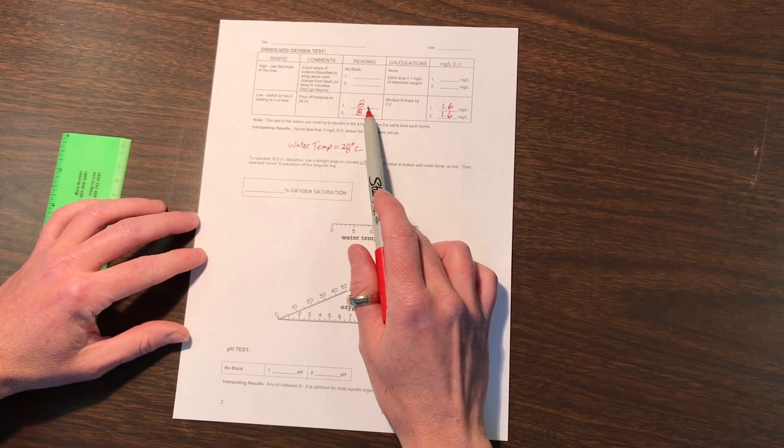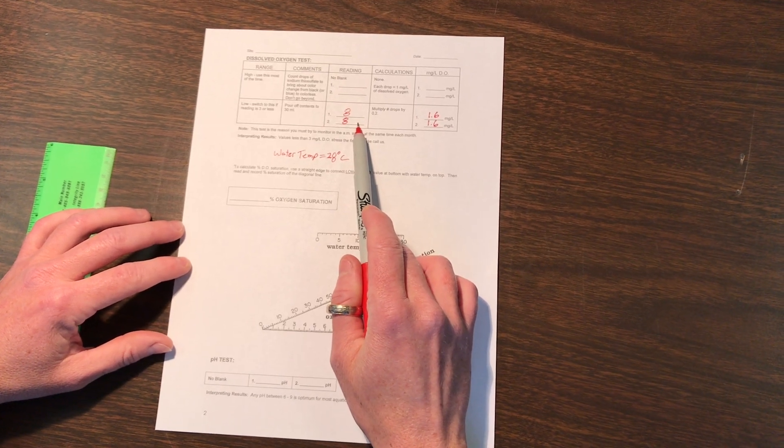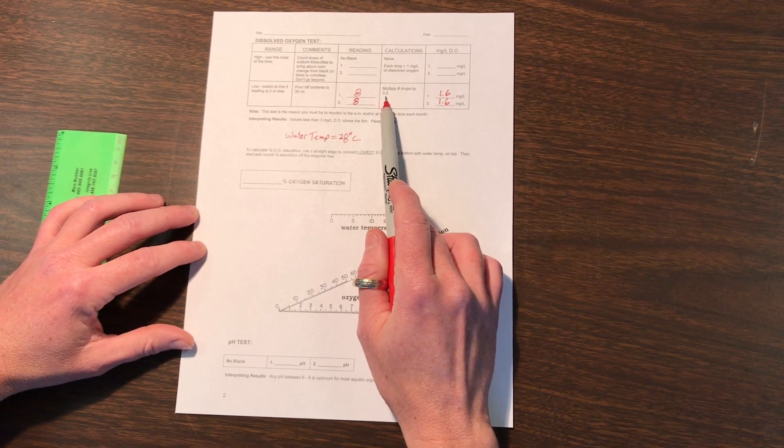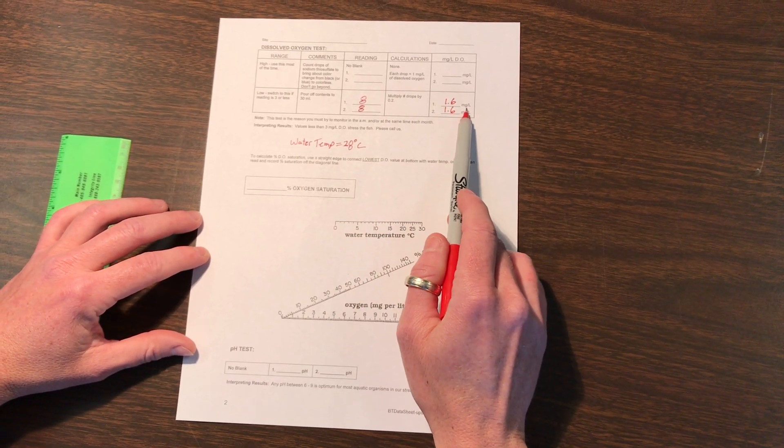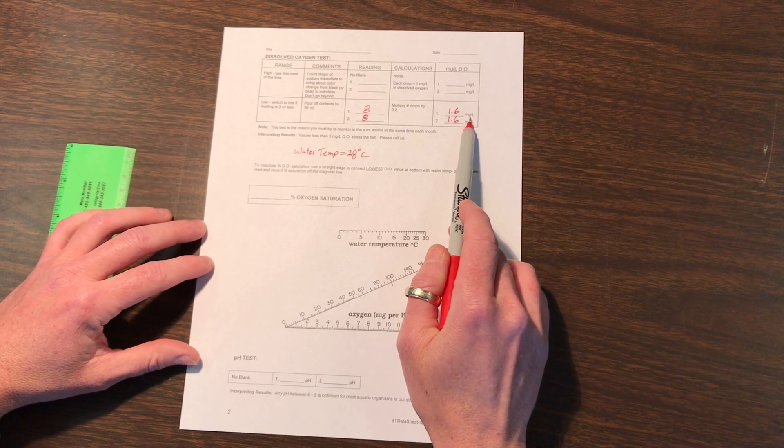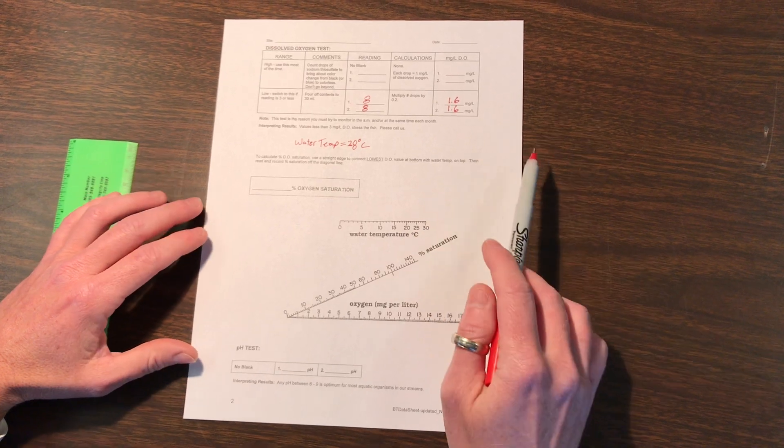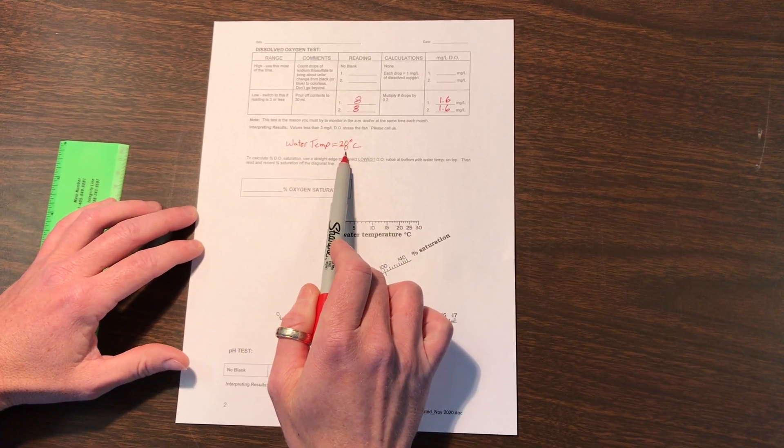We came up with 8 drops for both bottles, so that makes it easy. Multiplying each drop by 0.2, our calculated result is going to be 1.6 mg per liter of oxygen for this creek on this date. Our water temperature is 28 degrees Celsius, so pretty warm.